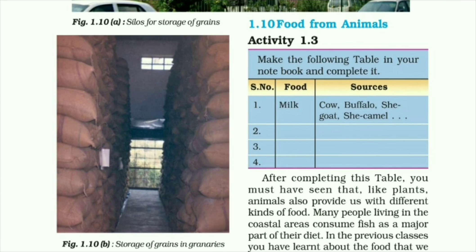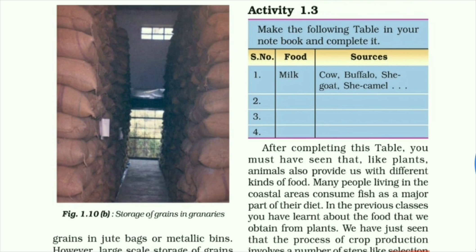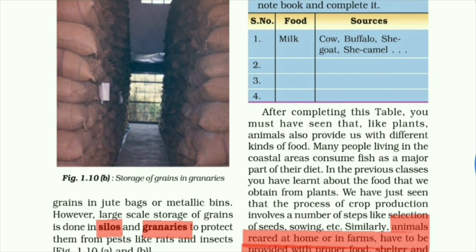Here we have a table — who gives us milk? Cow, buffalo, goat, and female animals. There are three other things and we get them from different sources. This is homework for you — complete the table and submit your answers in the comment section.